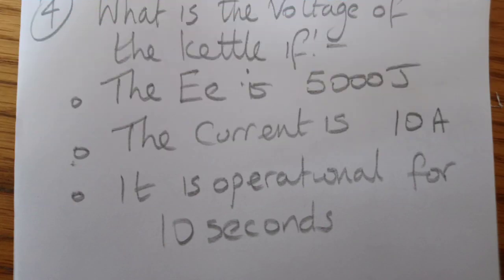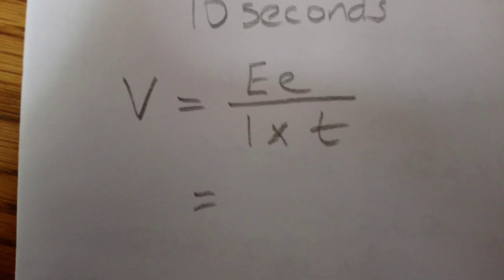Lastly, we've got the voltage to find this time. So we've got an electrical energy, a current, and a time. Again using this, changing the formula around: voltage is equal to electrical energy divided by current times time.